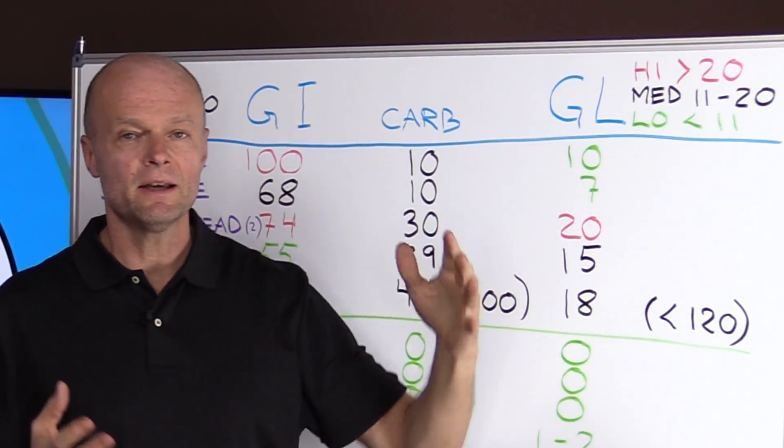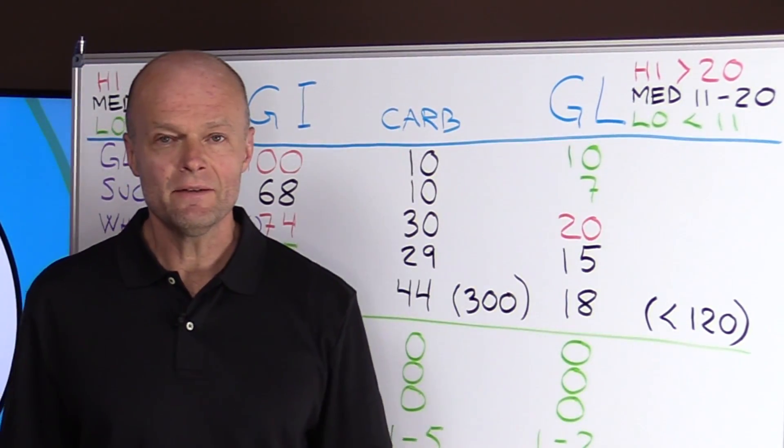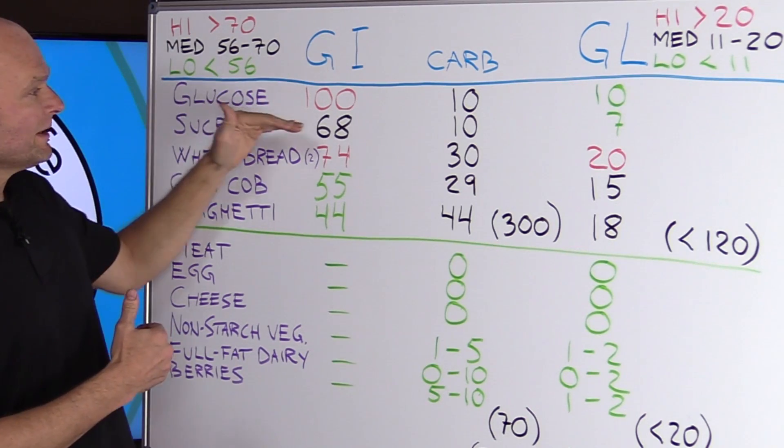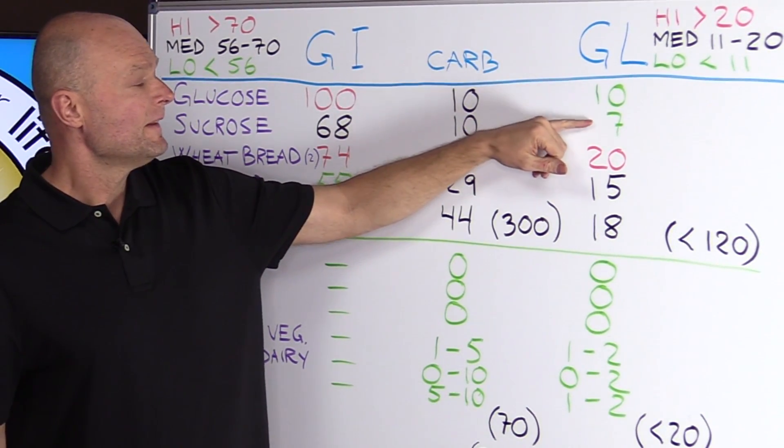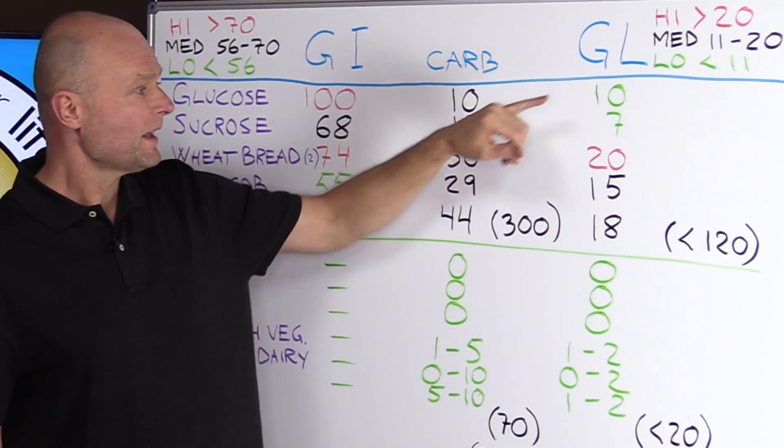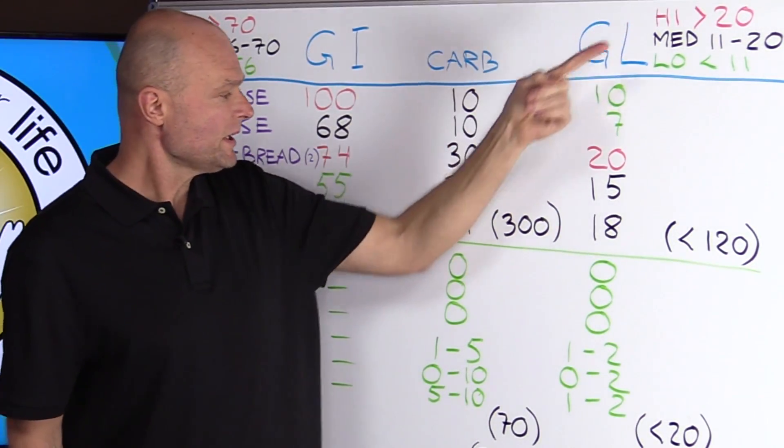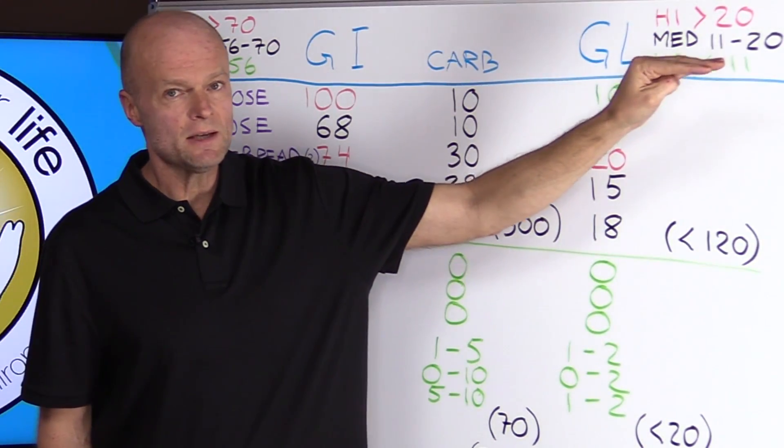A medium load is 11 to 20, and a low glycemic load is less than 11. So now, it looks like glucose and table sugar are really good because they're less than 11. And we find out that wheat bread is high because it's 20, and corn on the cob and spaghetti are somewhere in between. They're medium.